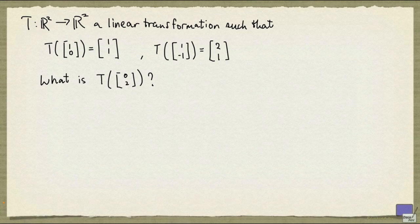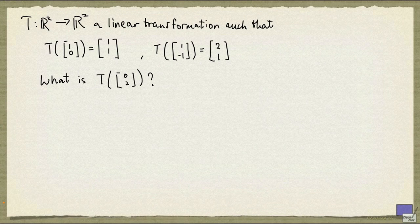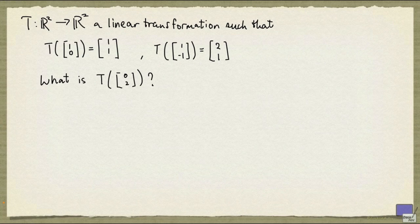Let T be a linear transformation from R² to R² such that T([1,0]) = [1,1] and T([1,-1]) = [2,1]. The question is, what is T([0,2])? We aren't given too much information here, and if there is any hope of answering this question, we would hope to be able to write [0,2] as a linear combination of [1,0] and [1,-1]. And that's what we're going to try to do.